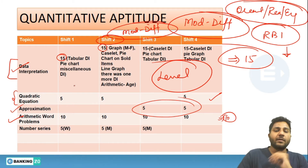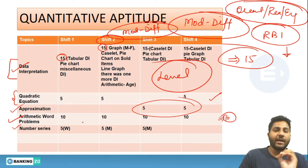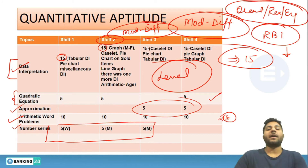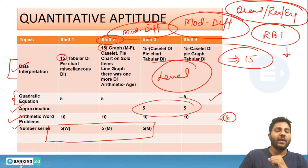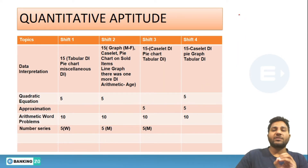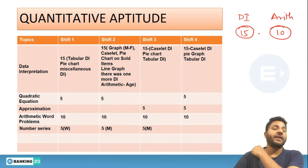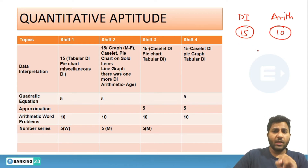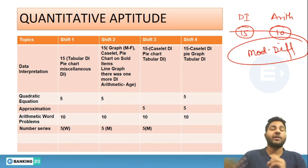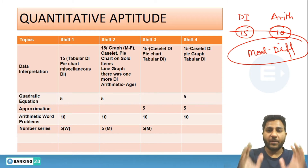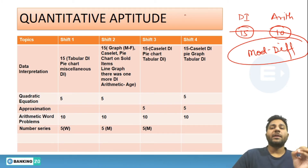Number series was skipped only in the last shift; all other shifts included it. In the quant section, the paper focused on DI and arithmetic — continuously asking 15 questions from DI and 10 questions from arithmetic. The paper was moderate to difficult level, so as predicted, the cutoff will come down and reduce to 65 to 70.